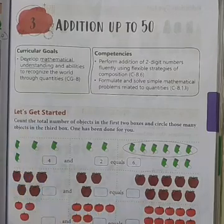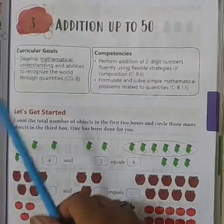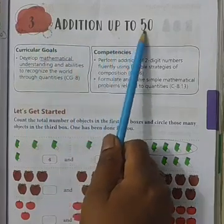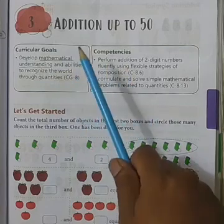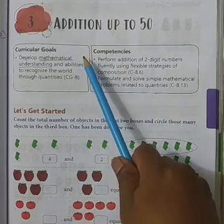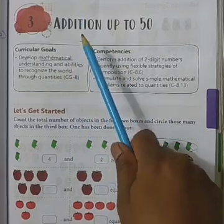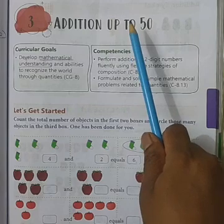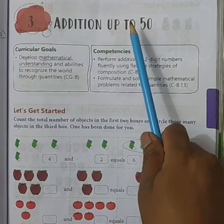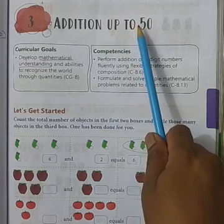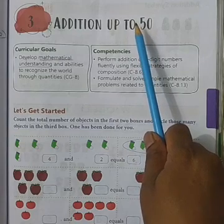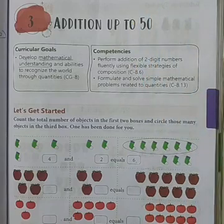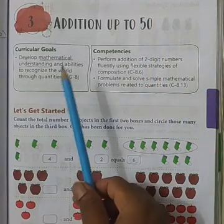Greetings to all students and parents. We are going to learn topic number 3: Addition up to 50 in this video, from the Grade 1 subject Mathematics. First, what is meant by addition up to 50? That means we have to learn about adding numbers which are up to 50 — that means one-digit numbers and two-digit numbers which are up to 50.